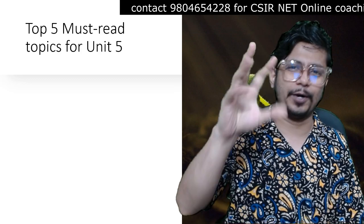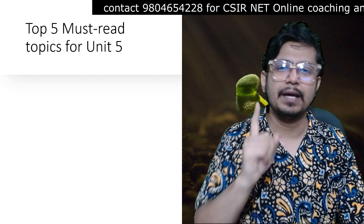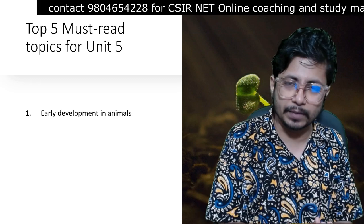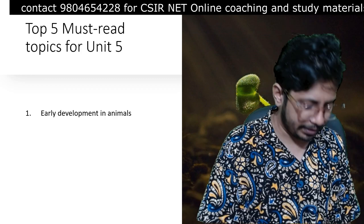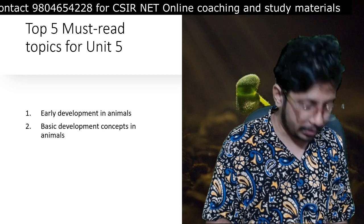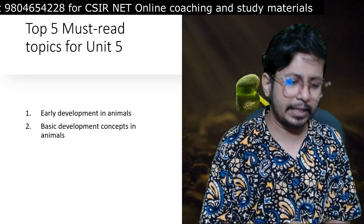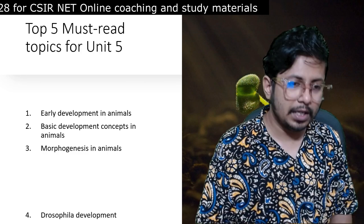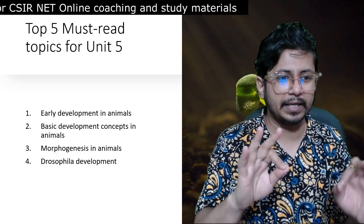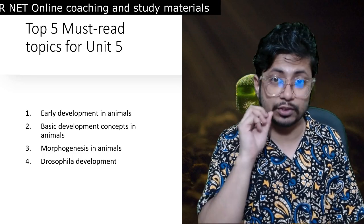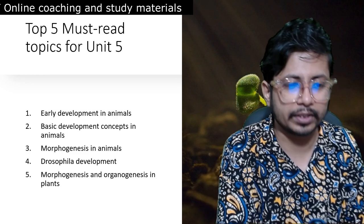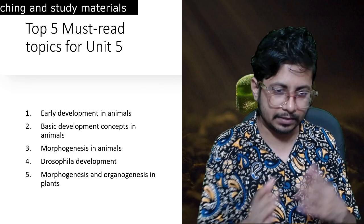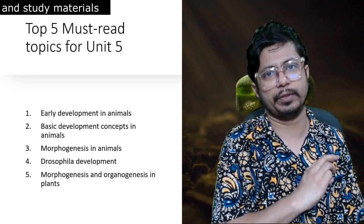Now let's talk about the top five must-read topics for Unit 5. First is early development in animals - sea urchin fertilization, cleavage pattern, gastrulation and everything. Second is basic development concepts in animals - induction, specification, specialization and all related features. Third is morphogenesis in animals - very important. Fourth, separately listed, is Drosophila development - anything related to Drosophila development is super important. Fifth is morphogenesis and organogenesis in plants, particularly the flower development part.